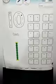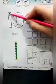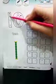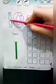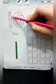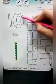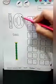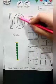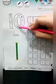Let's write 10. Start from the big dot, go down and down — that's 1. Then start from the big dot, go round and round — that's 0. 1 and 0 makes 10.